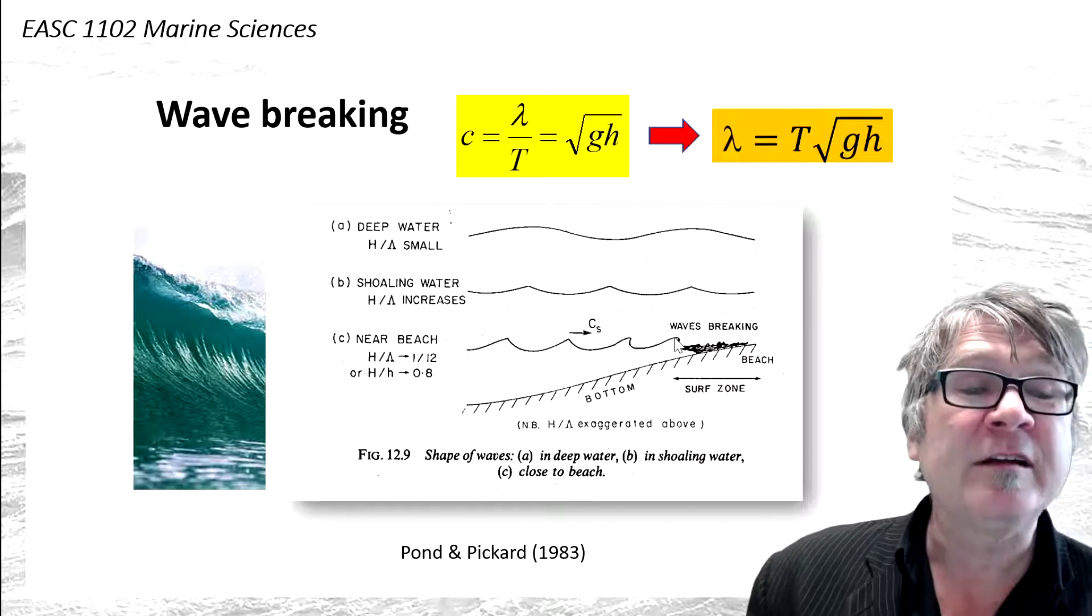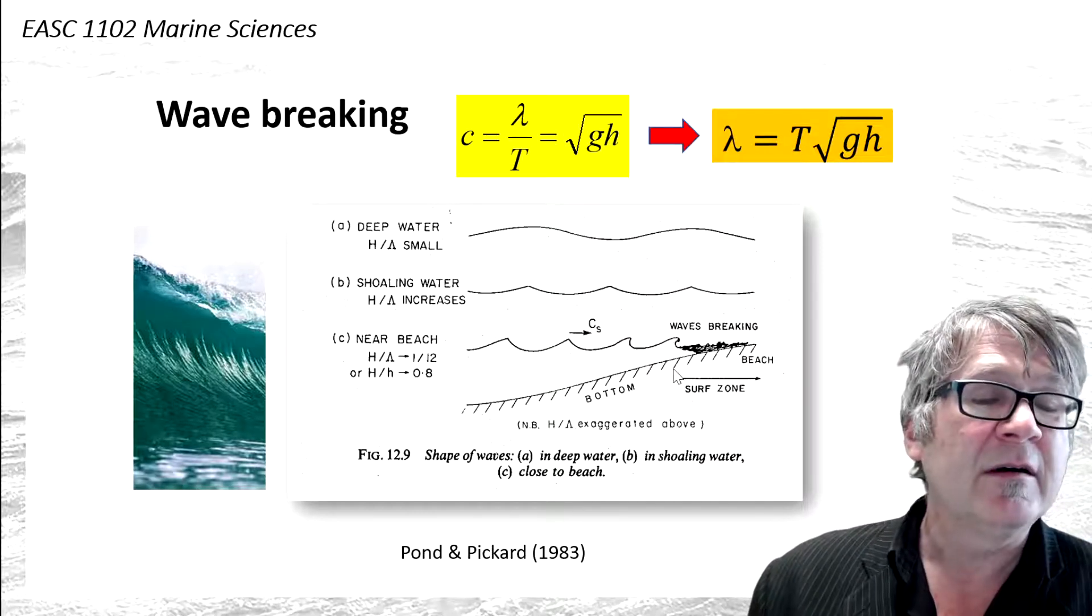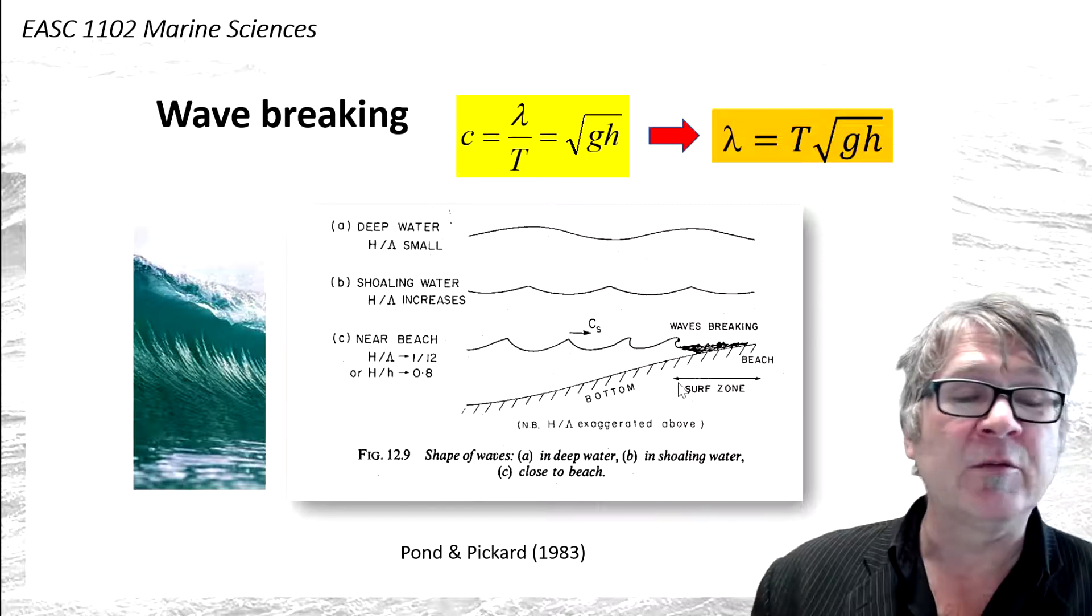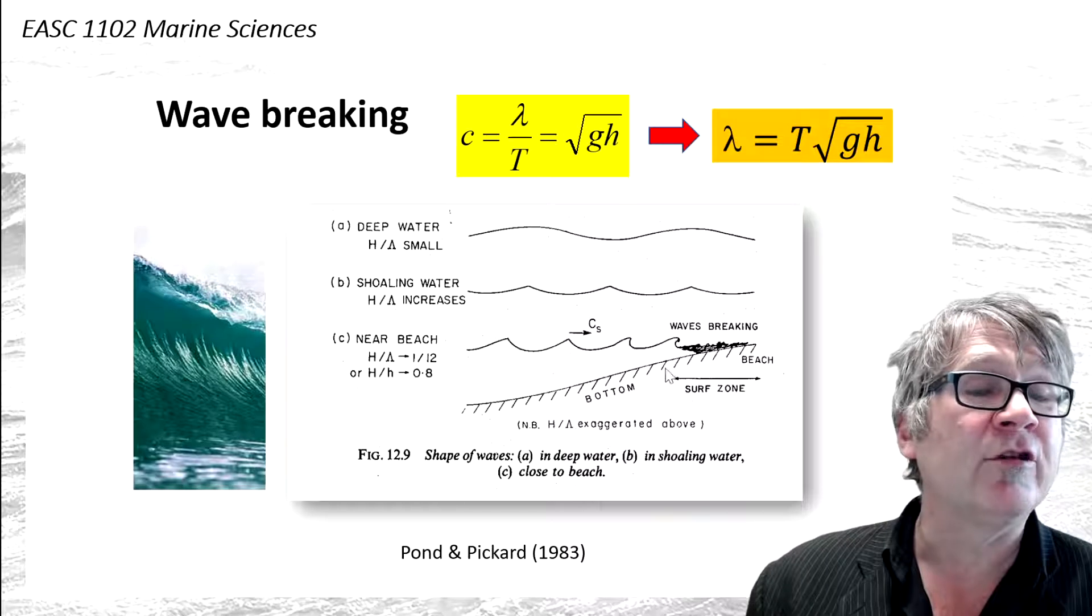The key feature is that wave speed under the crest is actually higher than under the trough, which makes the wave overturn and break.